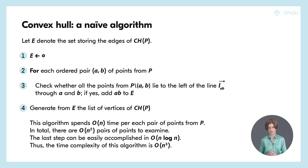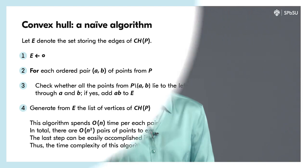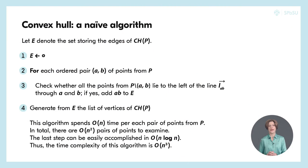And if this is the case, we place the segment AB in the set E. And as a final step, we generate from the set E a list of vertices of the convex hull of our point set P.